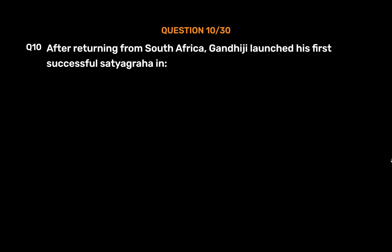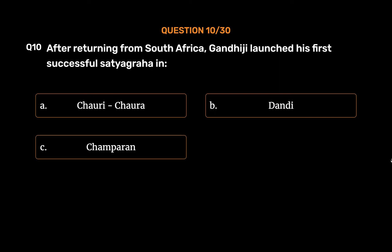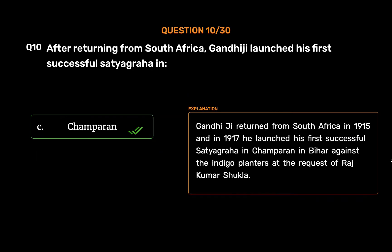Question No. 10. After returning from South Africa, Gandhiji launched his first successful Satyagraha in: Option A: Chauri Chaura. Option B: Dandi. Option C: Champaran. Option D: Bardoli. The correct answer is Option C: Champaran. Gandhiji returned from South Africa in 1915 and in 1917 he launched his first successful Satyagraha in Champaran in Bihar against the indigo planters at the request of Rajkumar Shukla.